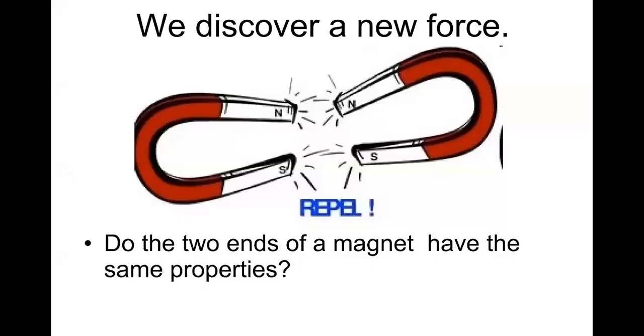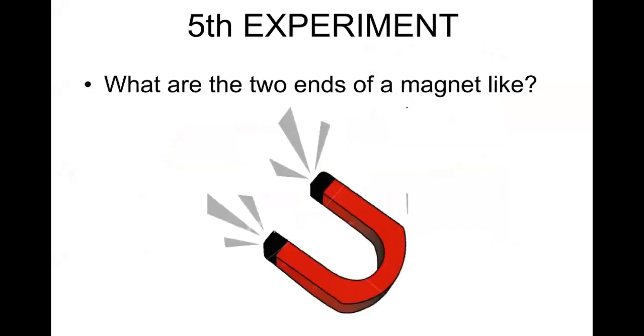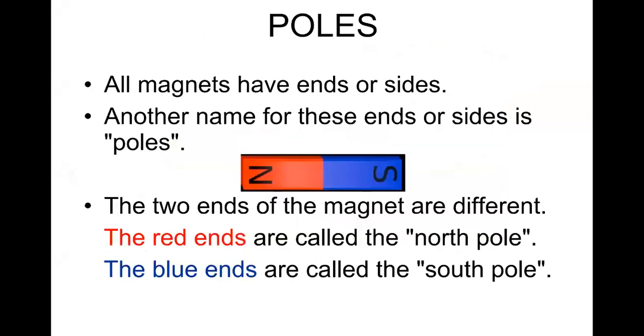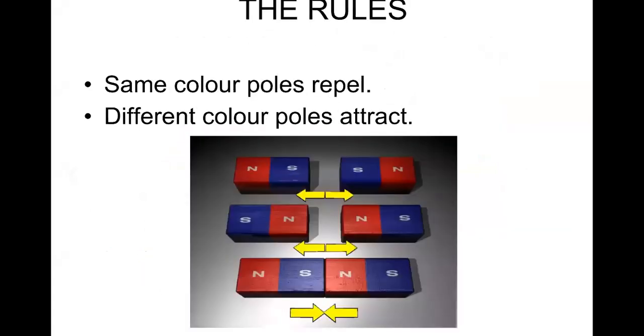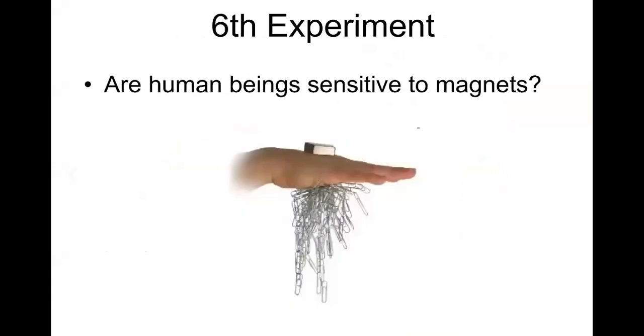And then we discover a new force, which is the force of repel. So we have the attraction and the repulsion forces. Poles. What is the meaning of poles? Same color poles repel, different color poles attract.